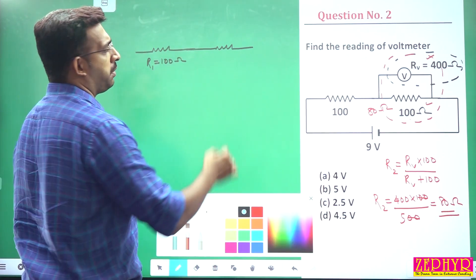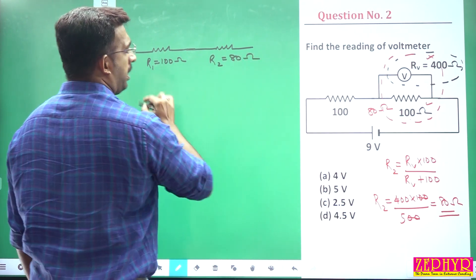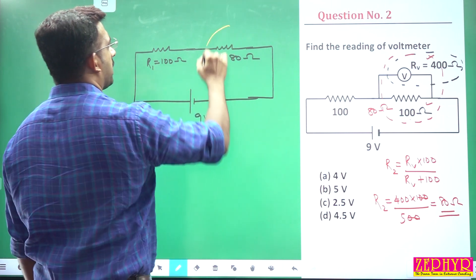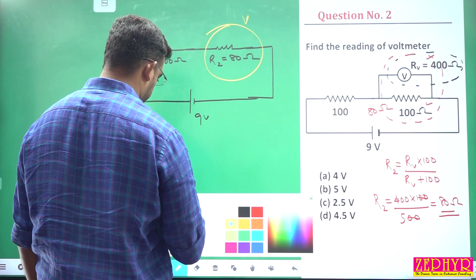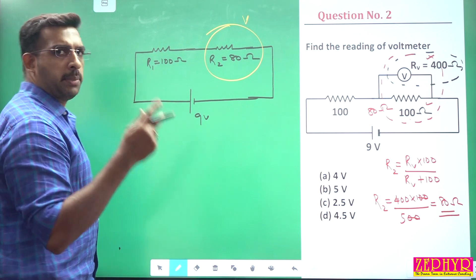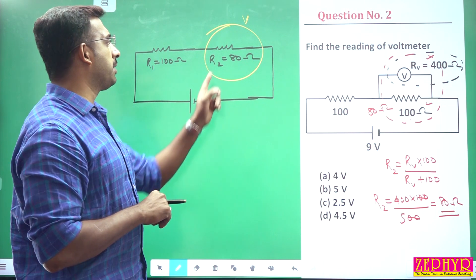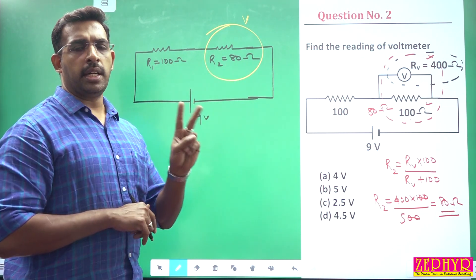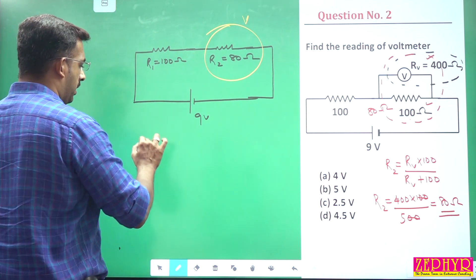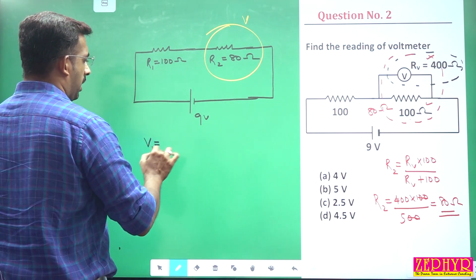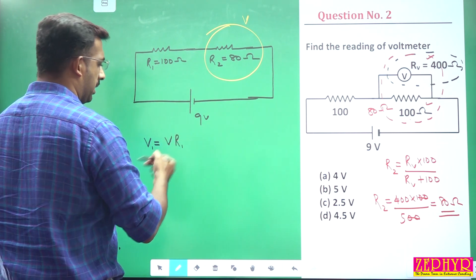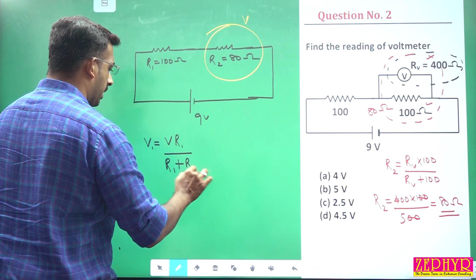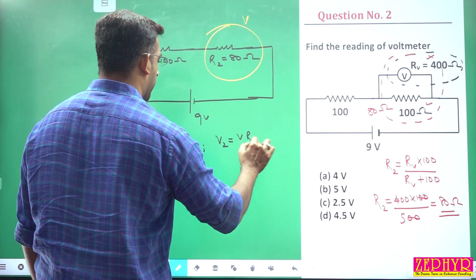We have R1 = 100 ohm and R2 = 80 ohm. A 9 volt source is connected across the circuit. Using the voltage divider formula: V1 = V × R1/(R1 + R2) and V2 = V × R2/(R1 + R2).